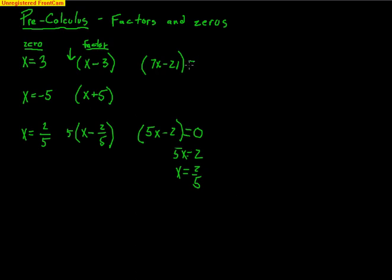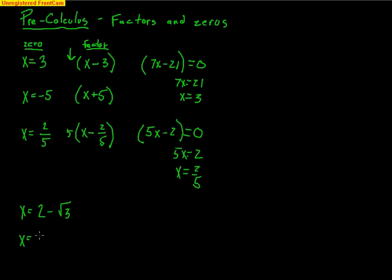Same thing with 7x minus 21: if I set it equal to zero, I get 7x equals 21, divide by 7, and I get back to x equals 3. Now, sometimes we get square roots that come up, like 2 minus the square root of 3. Square roots always come in what we call conjugate pairs. If 2 minus radical 3 is a zero, then 2 plus radical 3 automatically has to be another zero — they always come in pairs. The 2 doesn't change; it's the radical that can be negative or positive.